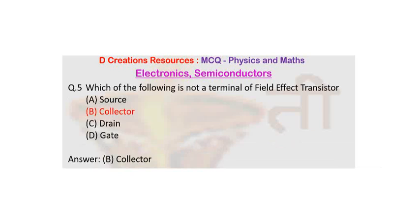Collector is a terminal of BJT, that is bipolar junction transistor, which is also a three terminal device. But it is a current control device, unlike FET or field effect transistor, which is a voltage control device.